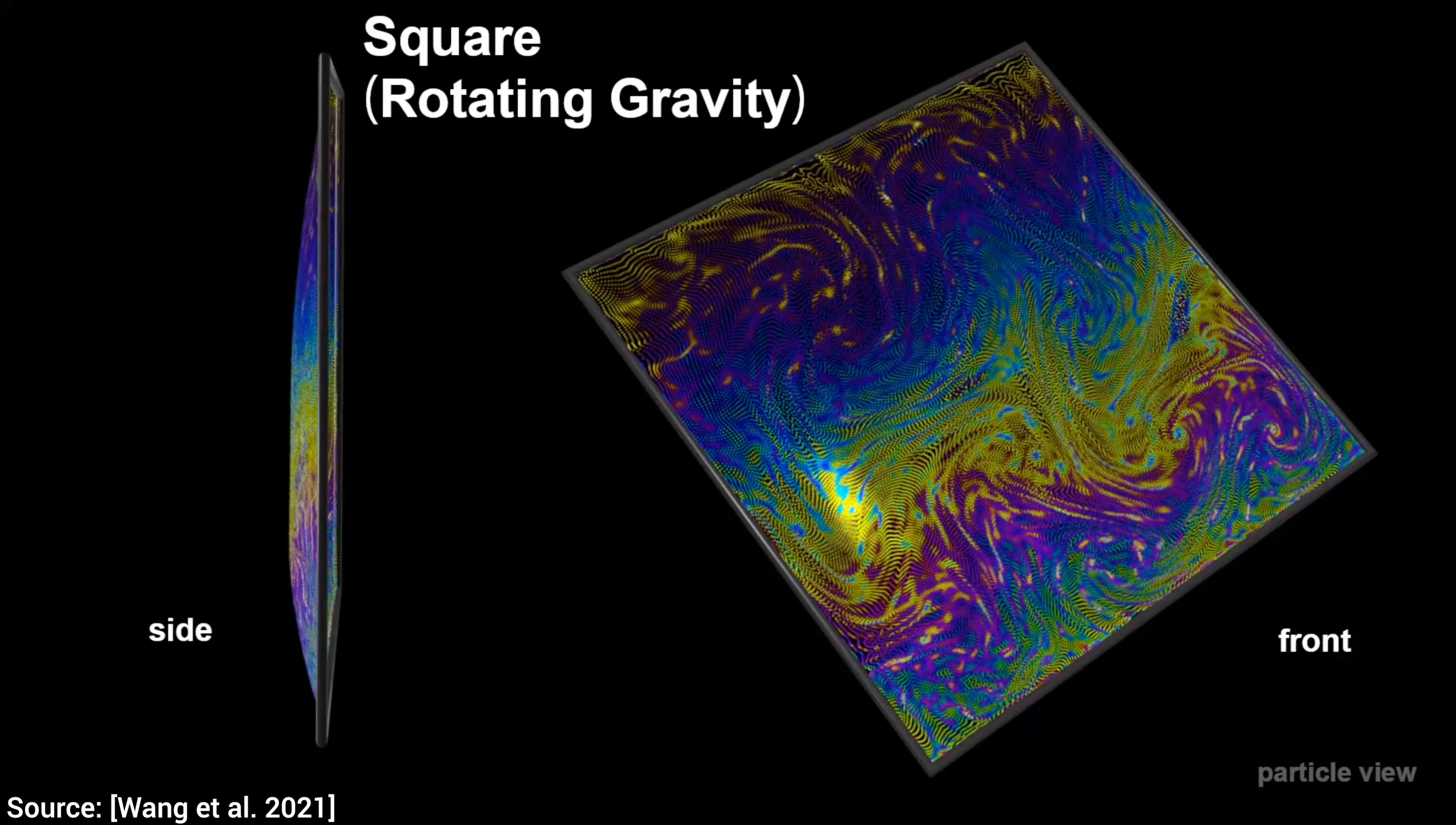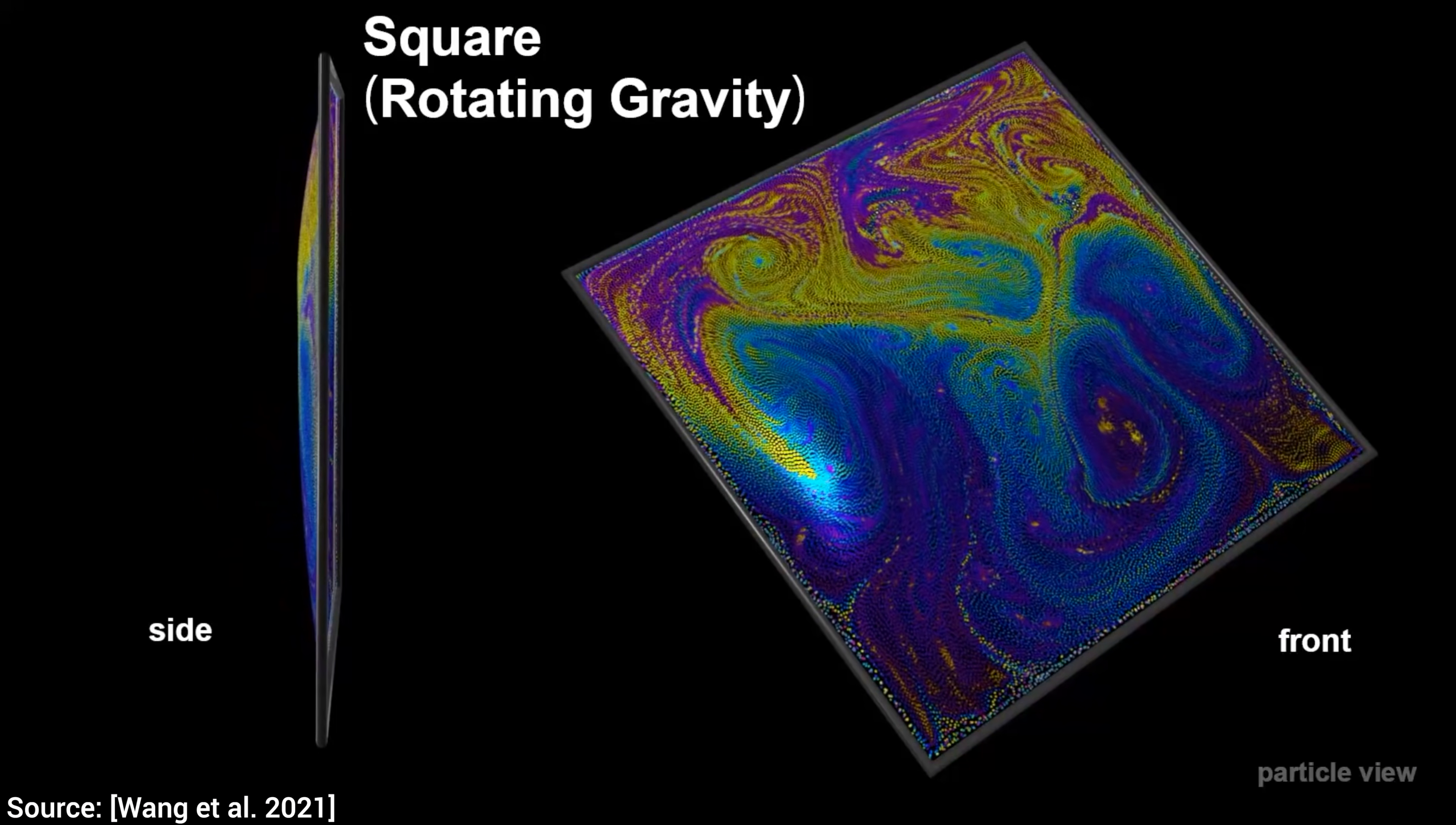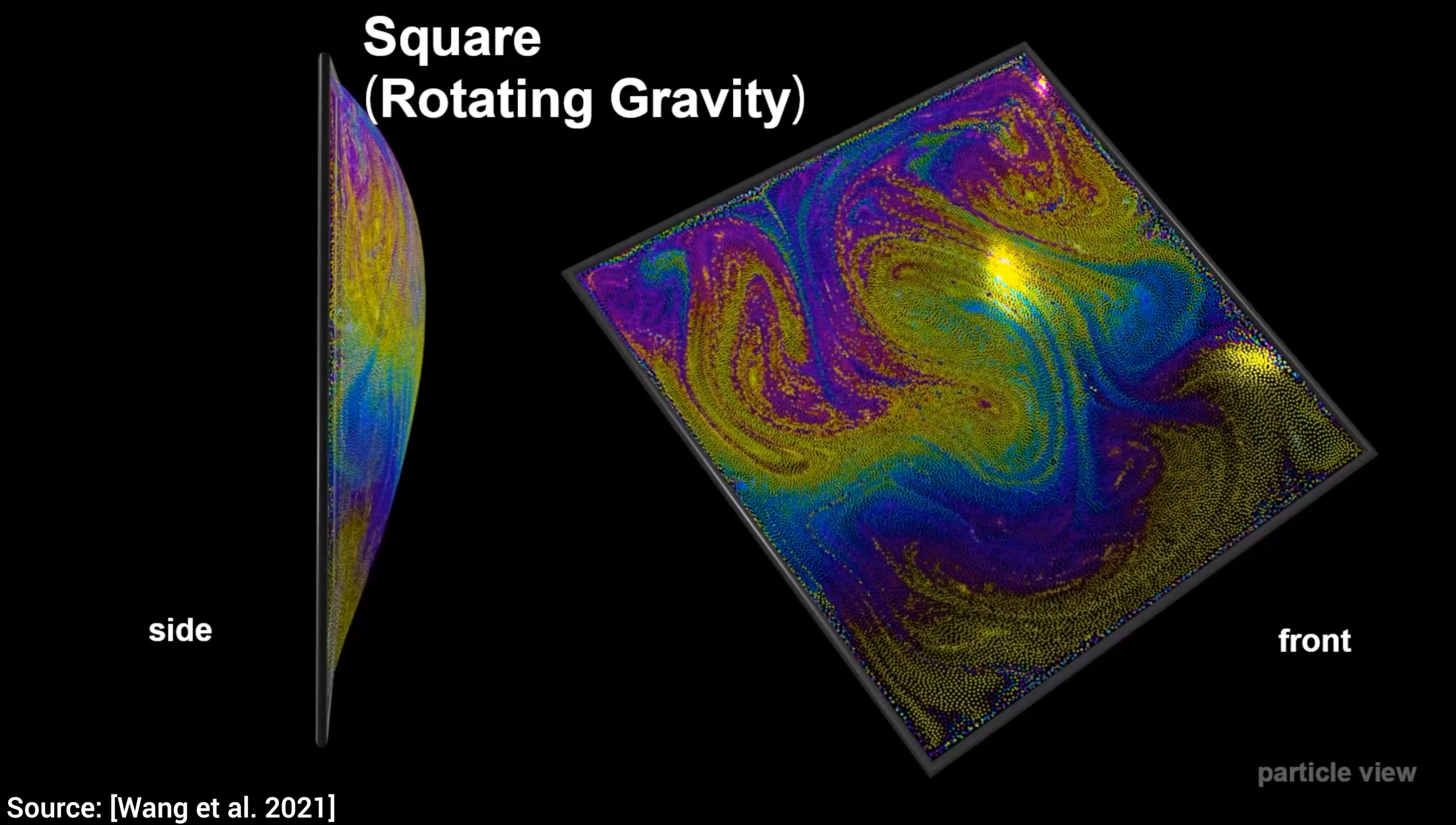And fourth, a thin film within a square is subjected to a gravitational pull that is changing over time. And the result is more swirly patterns.